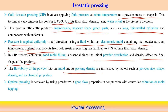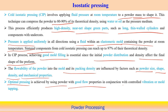Effectiveness depends on the initial powder distribution and initial density, which affect the final component. Flowability of the powder into the mold and packing density are influenced by powder size, shape, density, mechanical properties, and contamination. Optimal pressing is always required, using powder with good flow properties in conjunction with controlled vibration of mold tapping operations to enhance compacting capability.